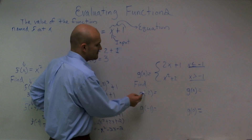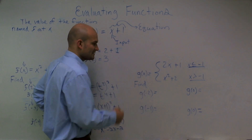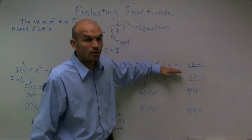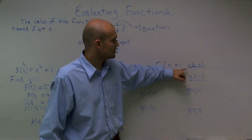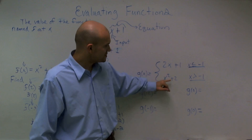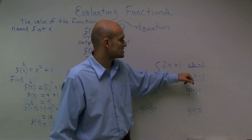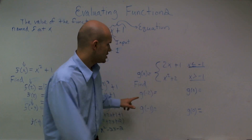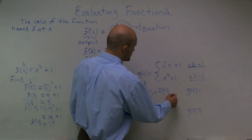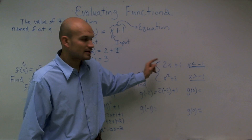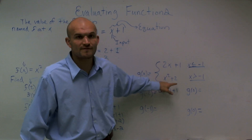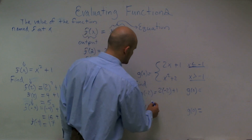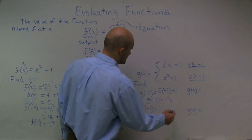Here it says find the value of my function g at negative 2. We look at the constraints: use 2x plus 1 when your input values are less than or equal to negative 1, and use x squared plus 2 when your values of x are greater than negative 1. I look at negative 2 and say that is less than negative 1, so I'm only going to plug it into the top equation. 2 times negative 2 is negative 4, plus 1 is negative 3. So g of negative 2 equals negative 3.